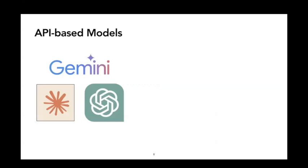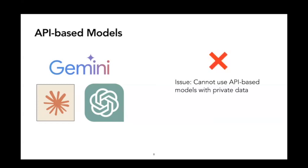And even if the biggest companies like Google, Anthropic, and OpenAI came out with their API-based models and improved the performance in specialized domains, we might not benefit from it. This is because people cannot share their data with other organizations, as it might break privacy regulations and breach contracts.